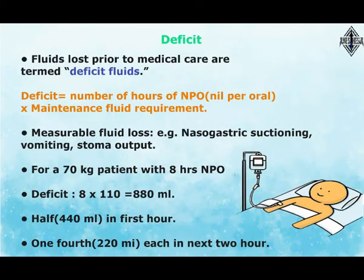For example, for a 70-kilogram patient, the maintenance fluid requirement is 40 plus 20 plus 50, which equals 110 milliliters per hour.